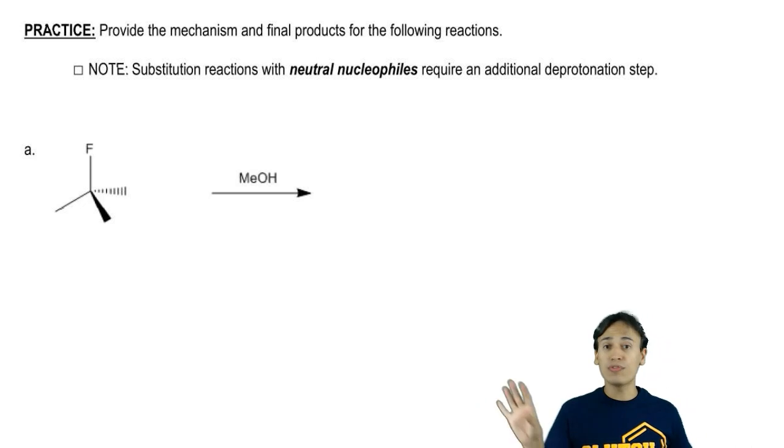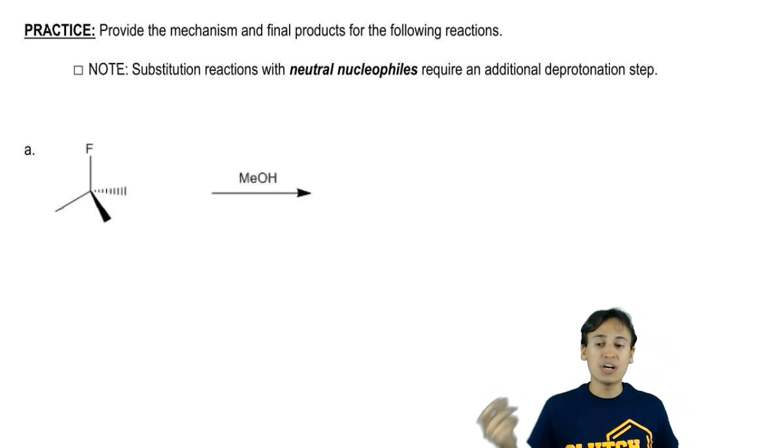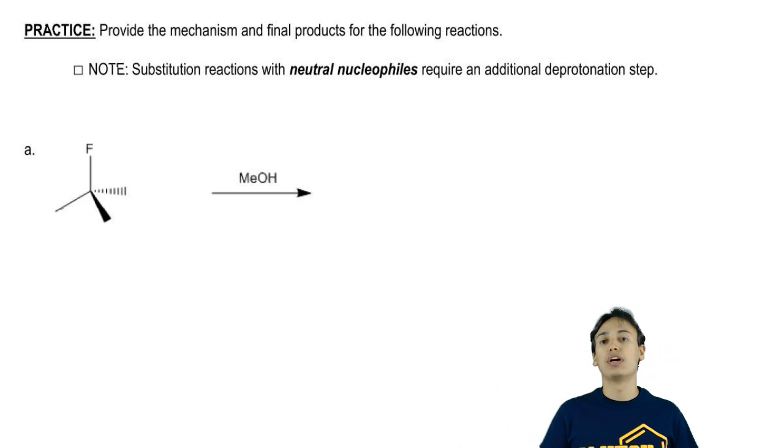The first thing to do before we even draw any arrows is let's just double check that these reagents even want to do an SN1 mechanism.